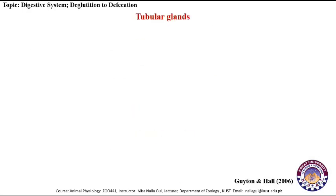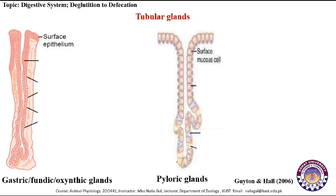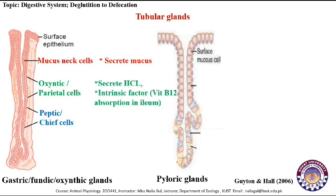The stomach has two types of tubular glands: the gastric glands, also called the fundic or oxyntic glands, and the pyloric glands. The gastric glands are composed of three types of cells: mucus neck cells, oxyntic cells (also known as parietal cells), and peptic cells (also known as chief cells). Mucus neck cells secrete mucus. Oxyntic cells secrete hydrochloric acid and intrinsic factor, which is responsible for the absorption of vitamin B12 in the ileum. Peptic cells secrete pepsinogen, which is activated by hydrochloric acid secreted by the parietal cells.